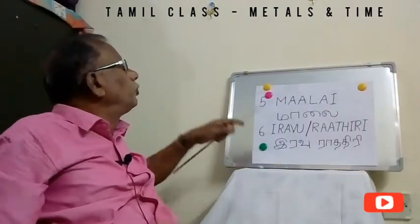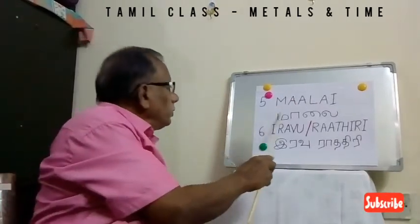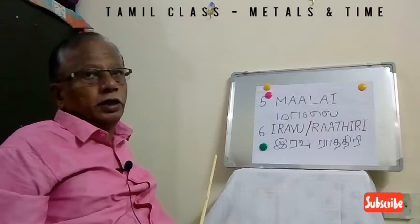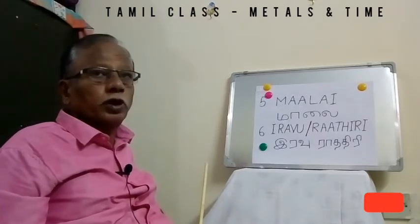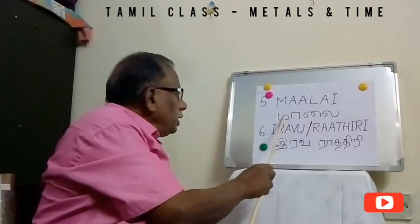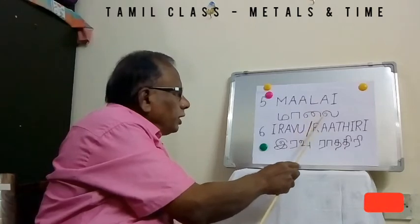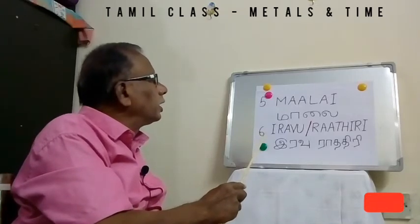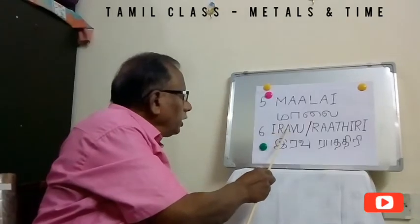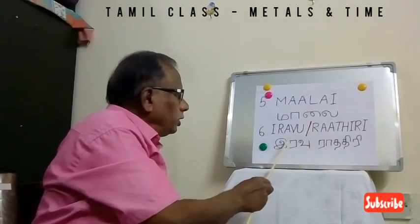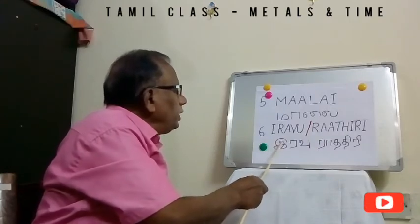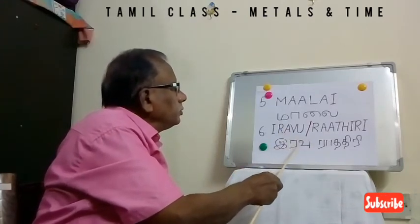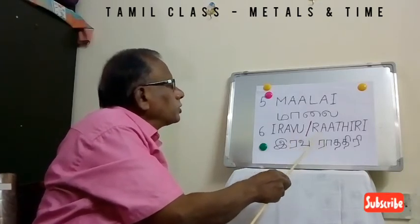The fifth one is Molly — Molly means evening. There are other meanings too: Molly is also used for Garland, but here it means evening. The sixth one is Iraavu — also called by another name. Iraavu means night.